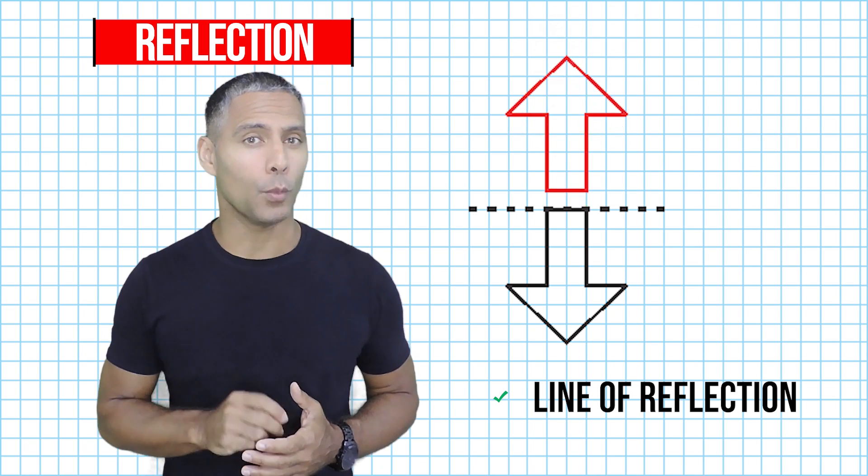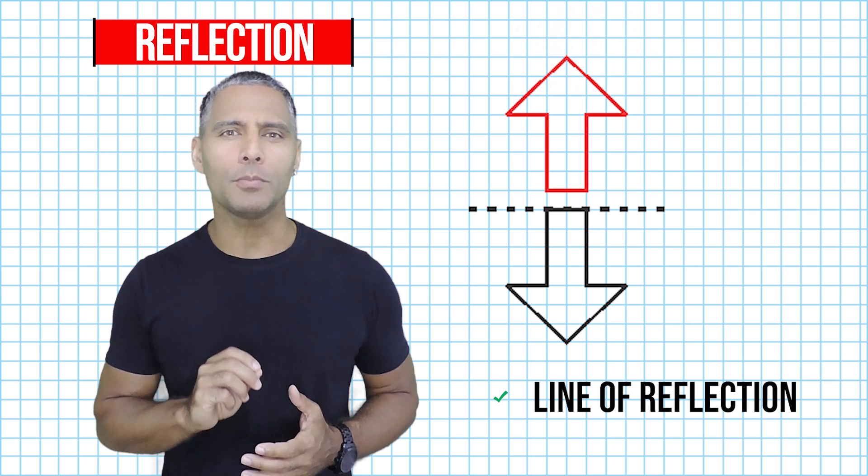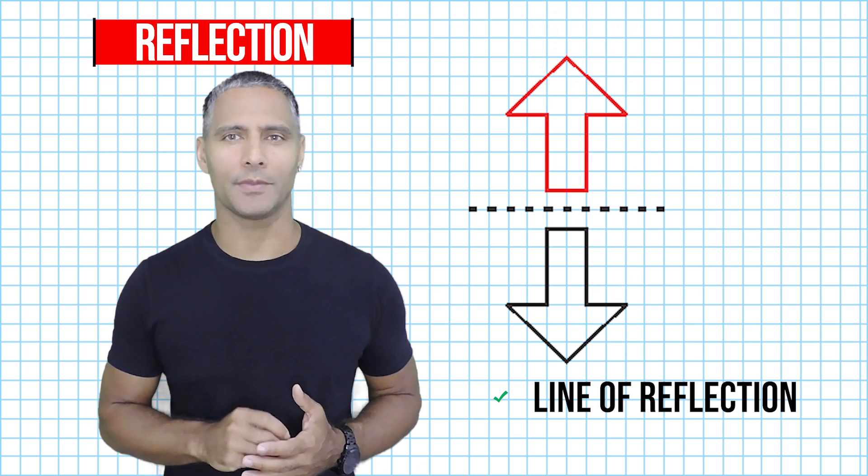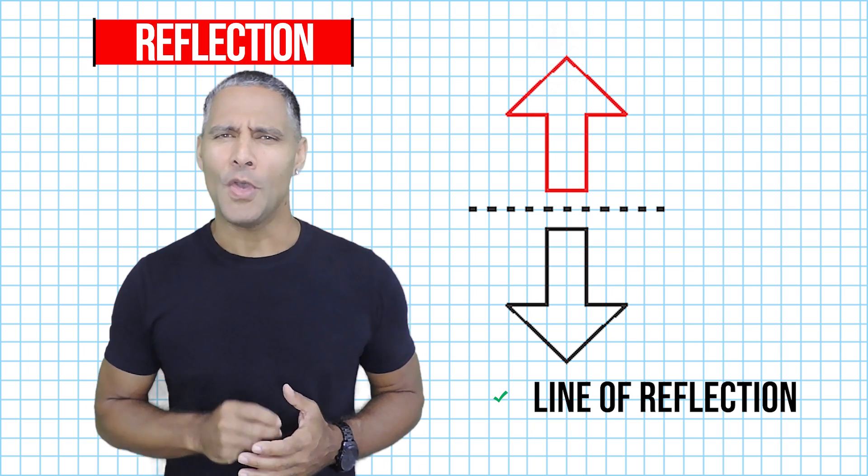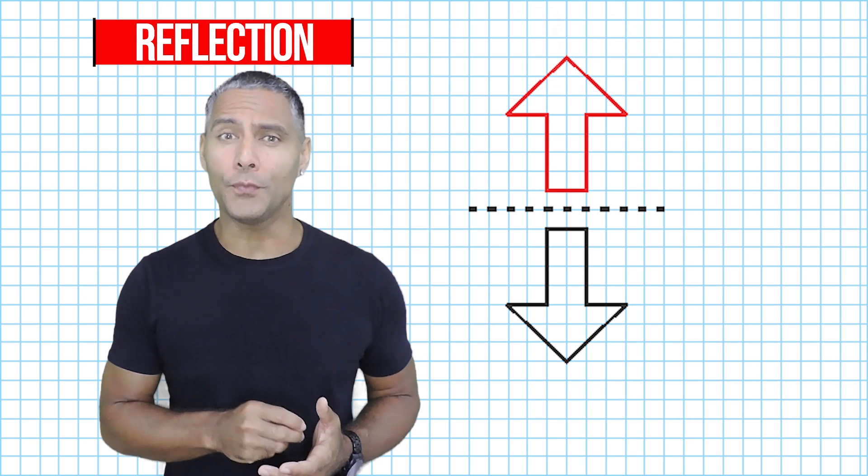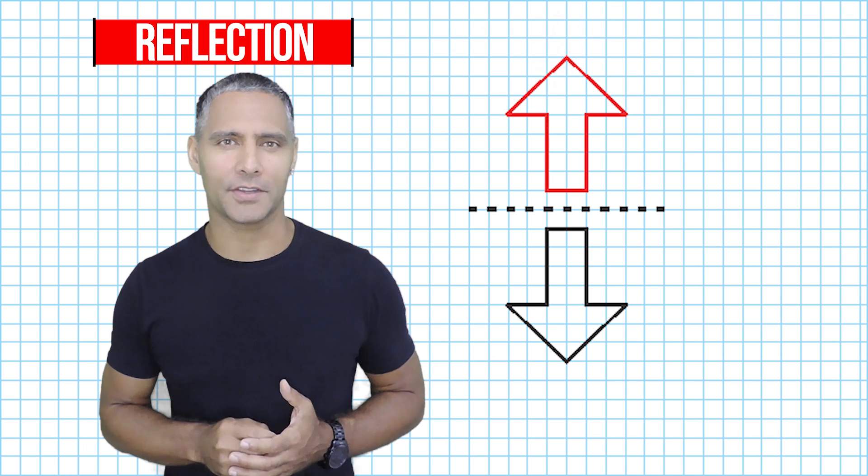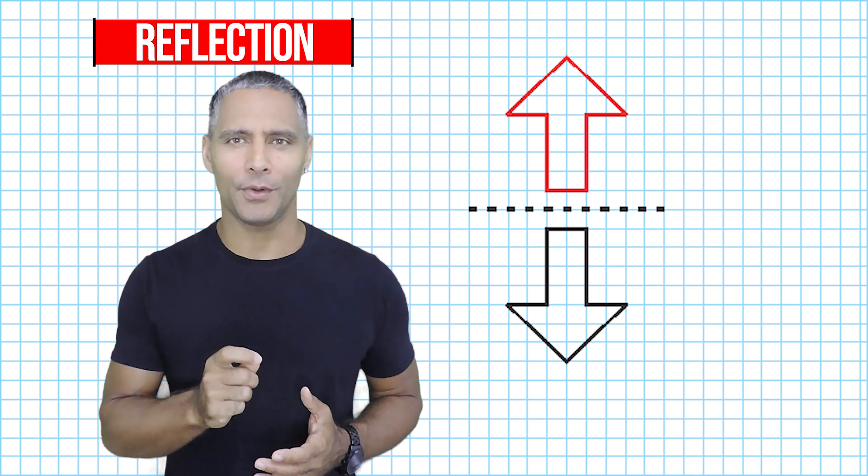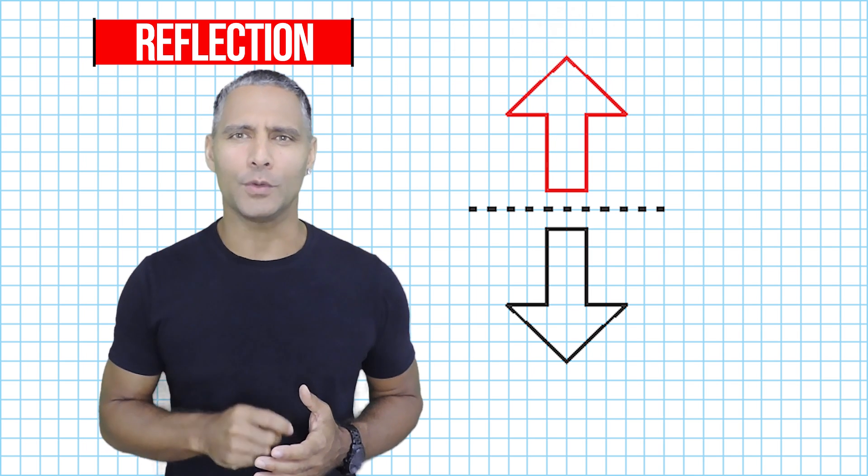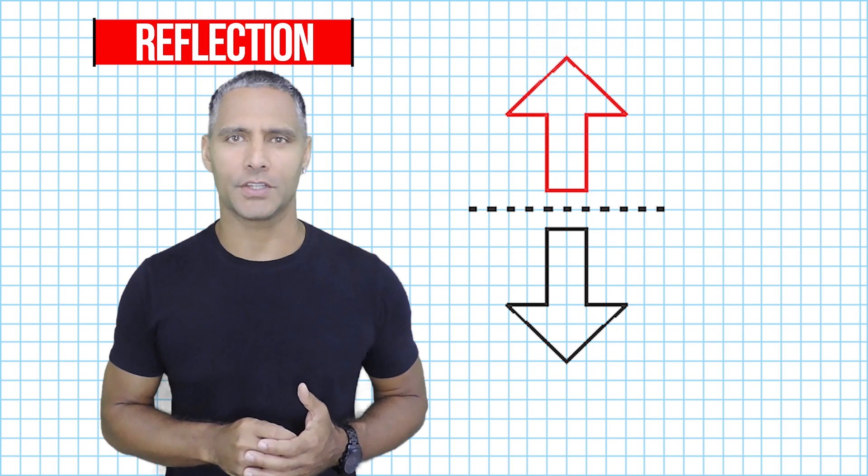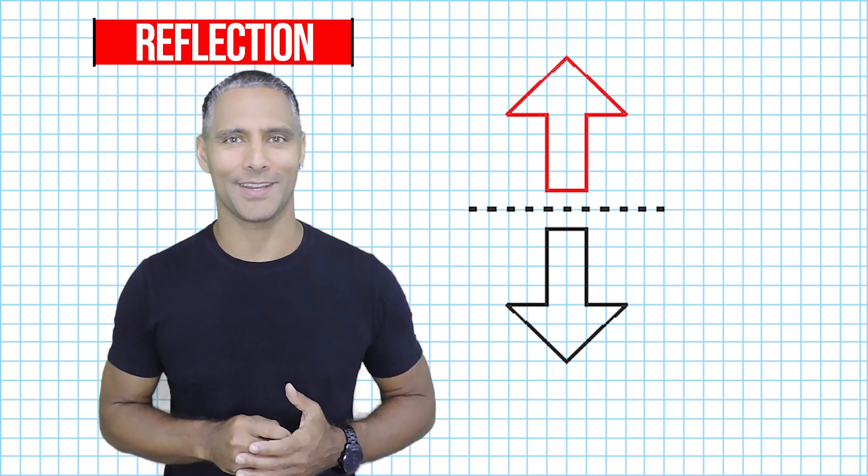If we move one arrow one unit away from the line, we must move the other arrow one unit away from the line as well. Think about the line of reflection like a fold in a piece of paper. If you were to fold the paper along the line of reflection, the two objects should line up perfectly. That is one way you can determine where a line of reflection would be located between two objects.